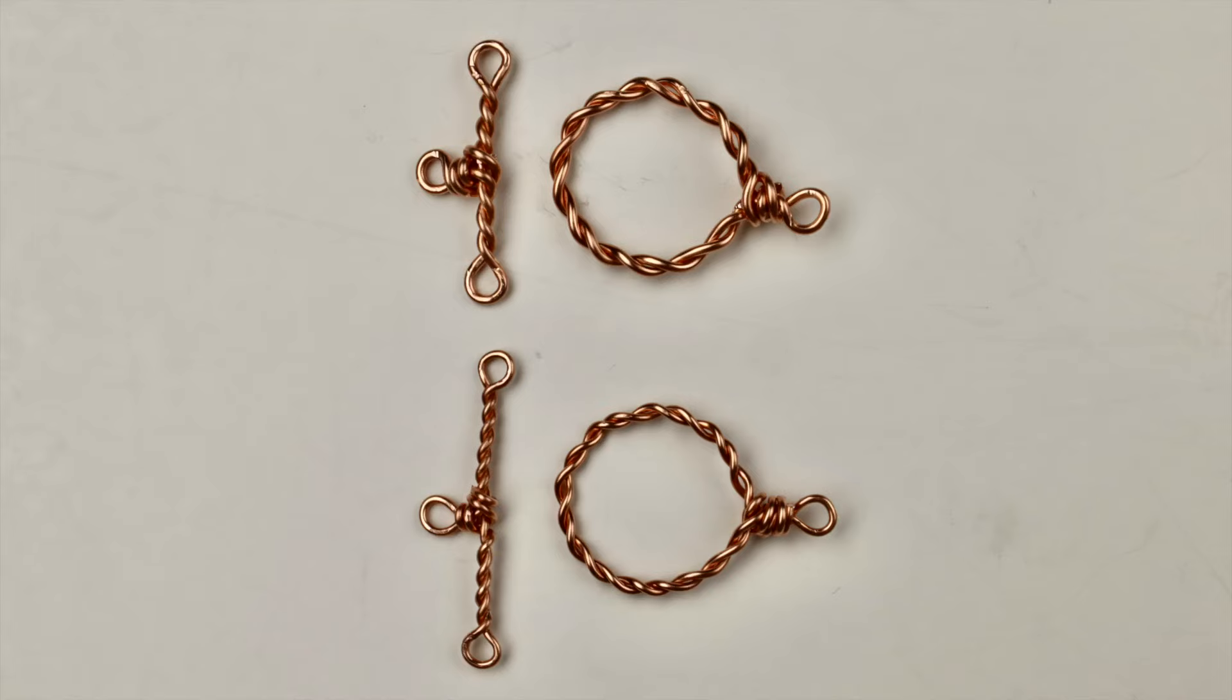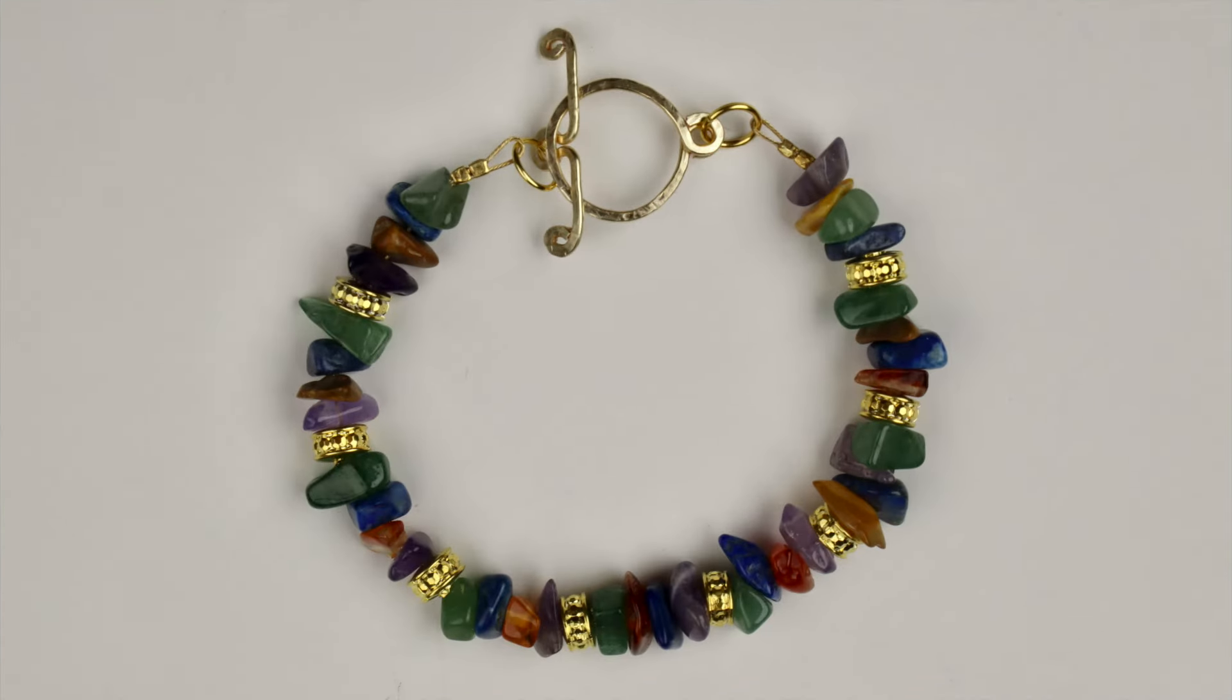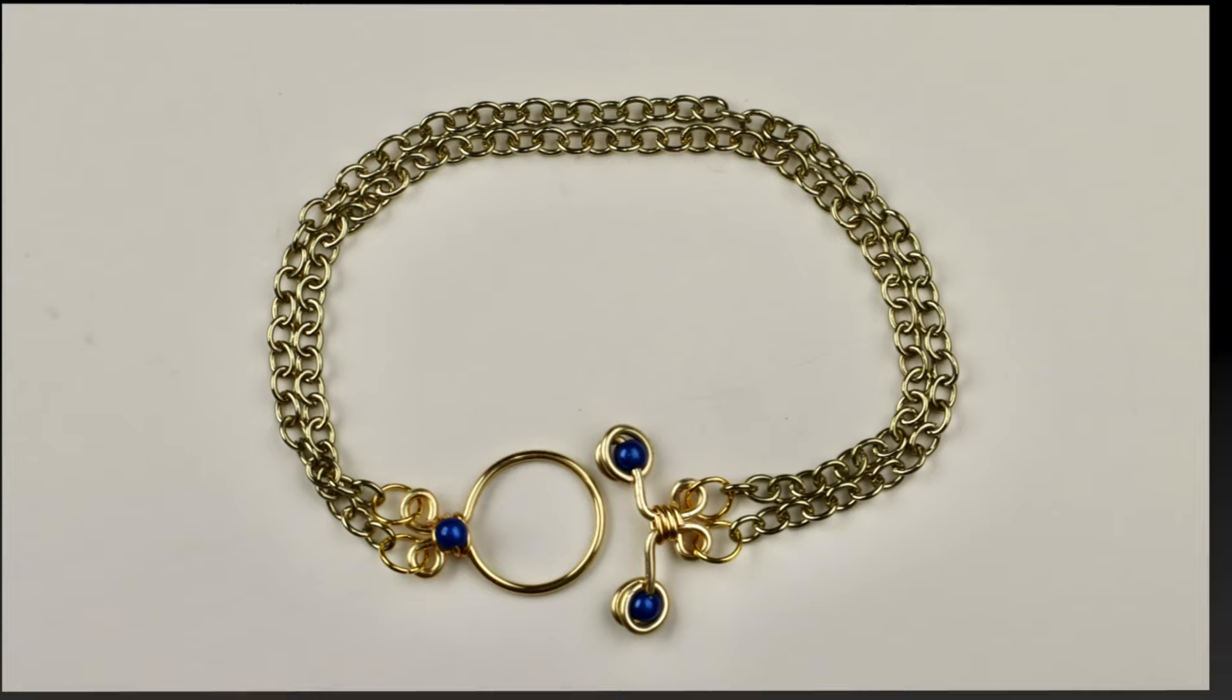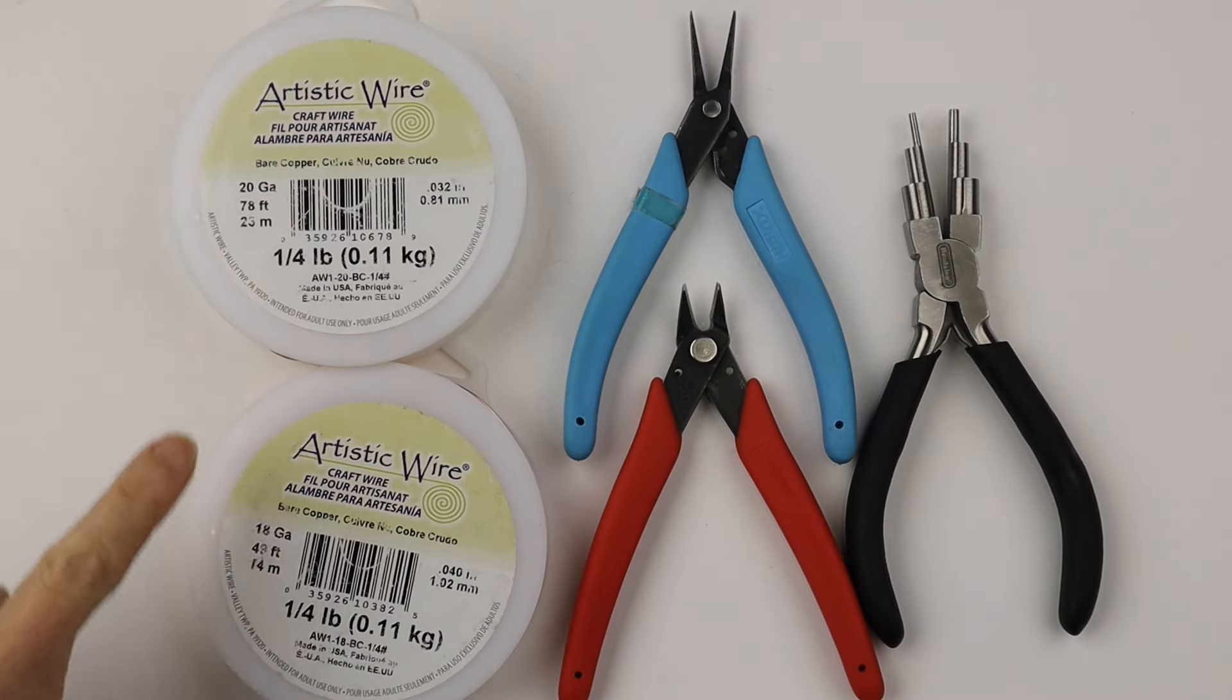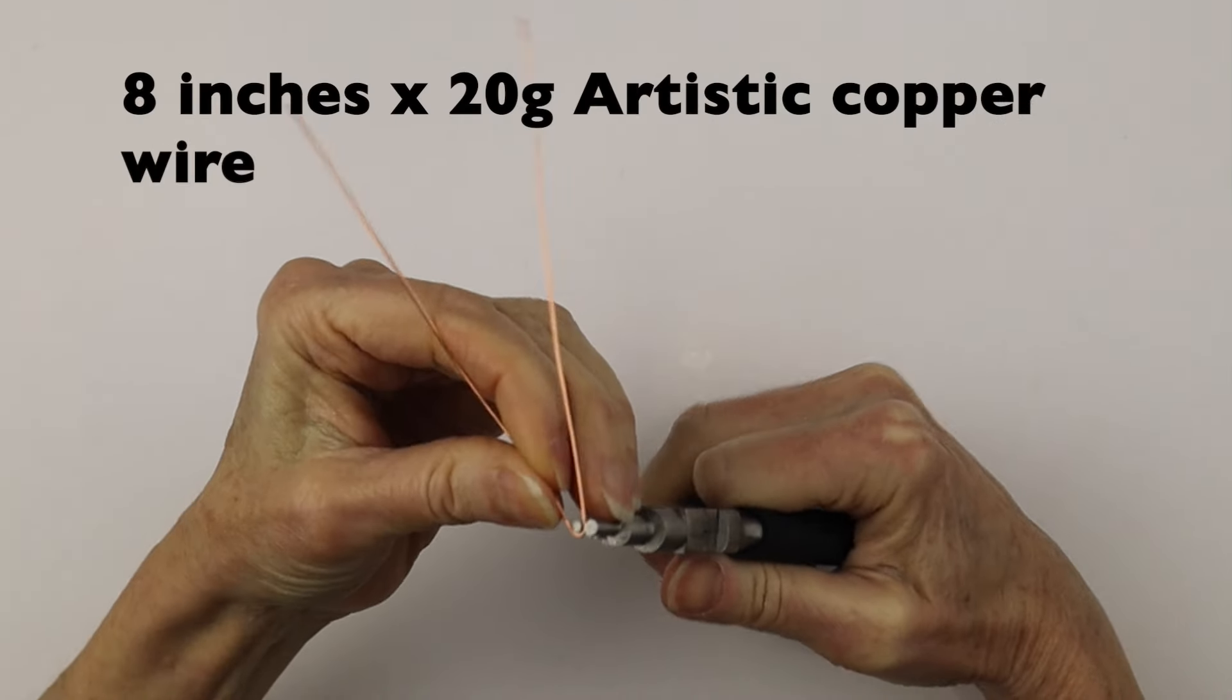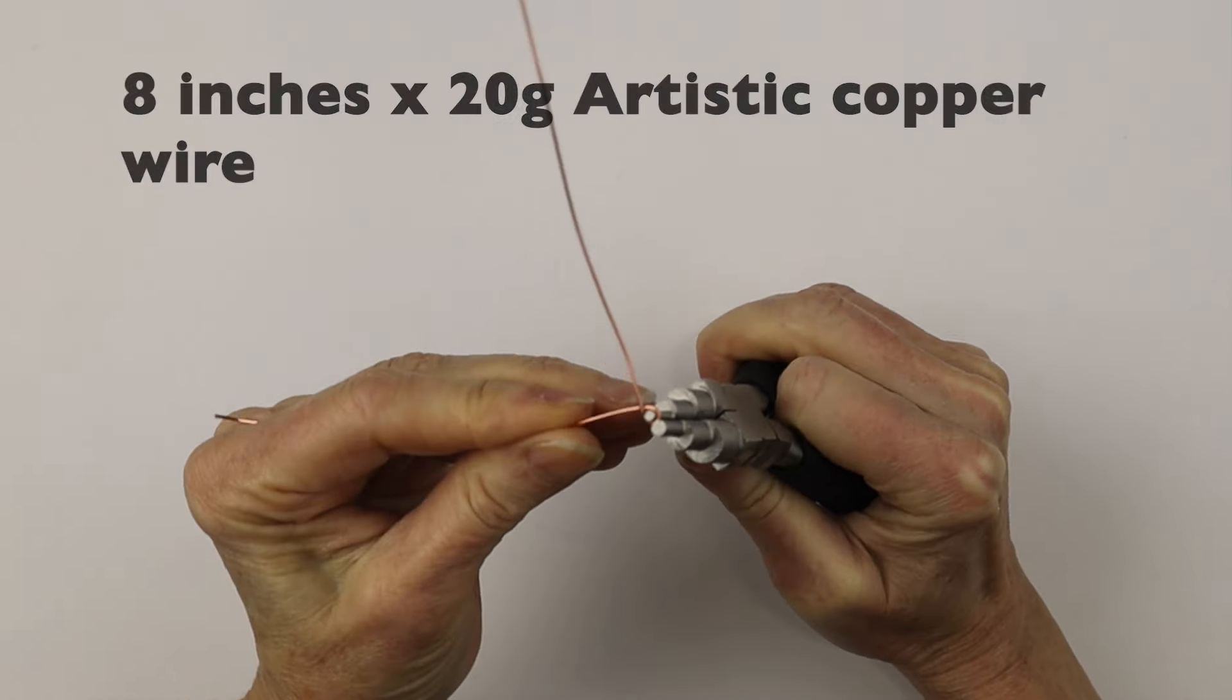Hey there, Heather Boyd Wire here. Today I'm making some twisted wire toggle clasps inspired by the flat wire toggles and also the beaded wire toggles. You are going to need some 18 or 20 gauge wire, some flat pliers, cutters, and your looping pliers. I also am using a ring form and we're going to start with about 8 inches of 20 gauge wire.